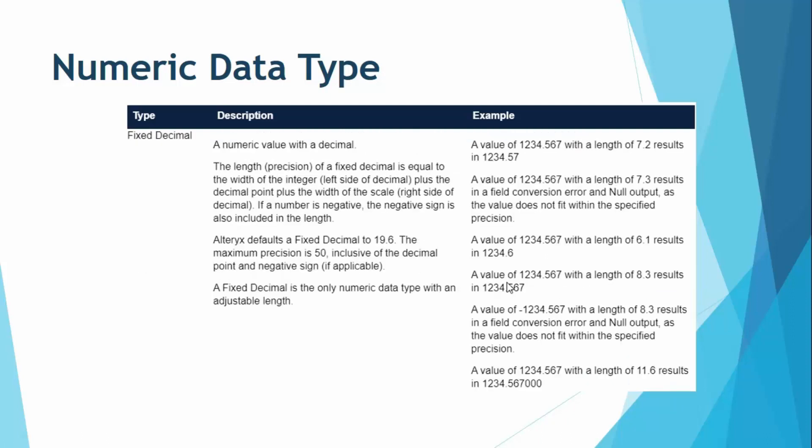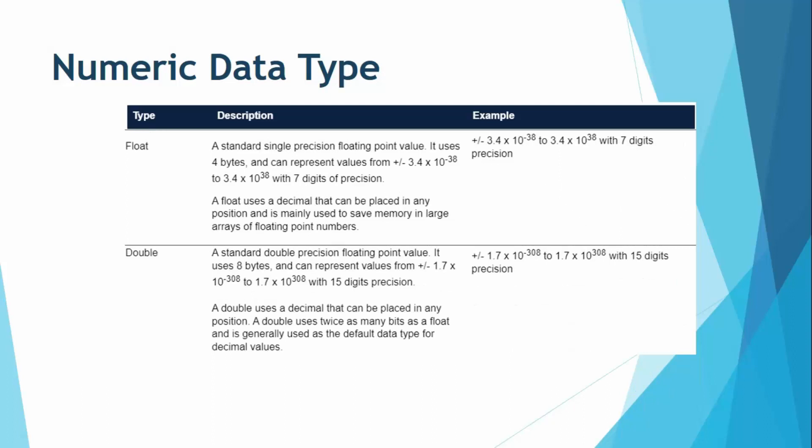Fixed decimal is used for currency — it is a numeric value with a decimal point. Float and double are used for the most precise numbers. However, float and double are not ideal for comparisons because they are never considered exactly equal. Float is generally used to save memory.